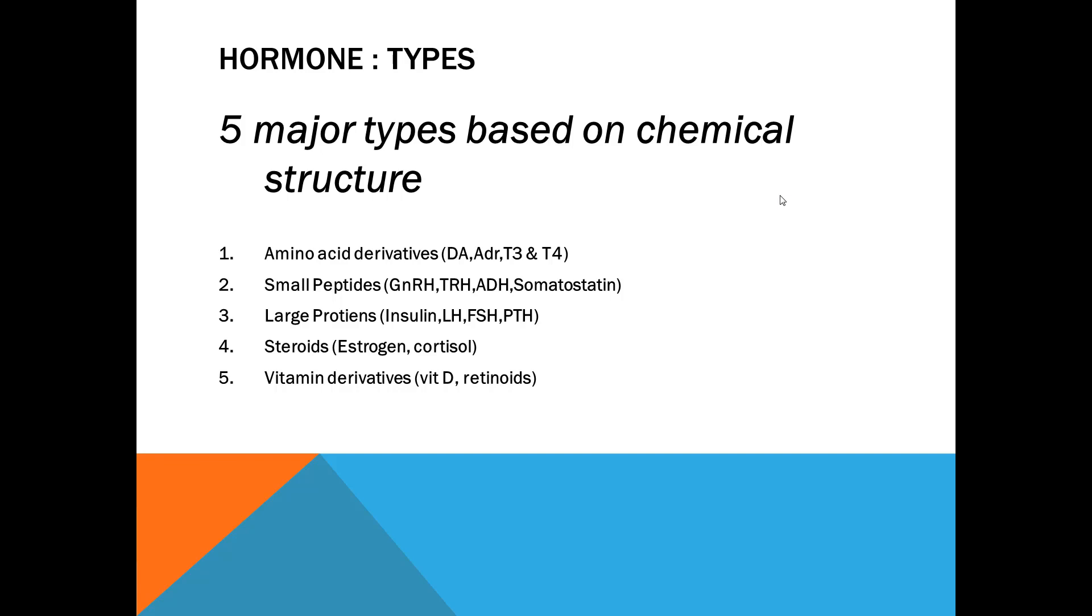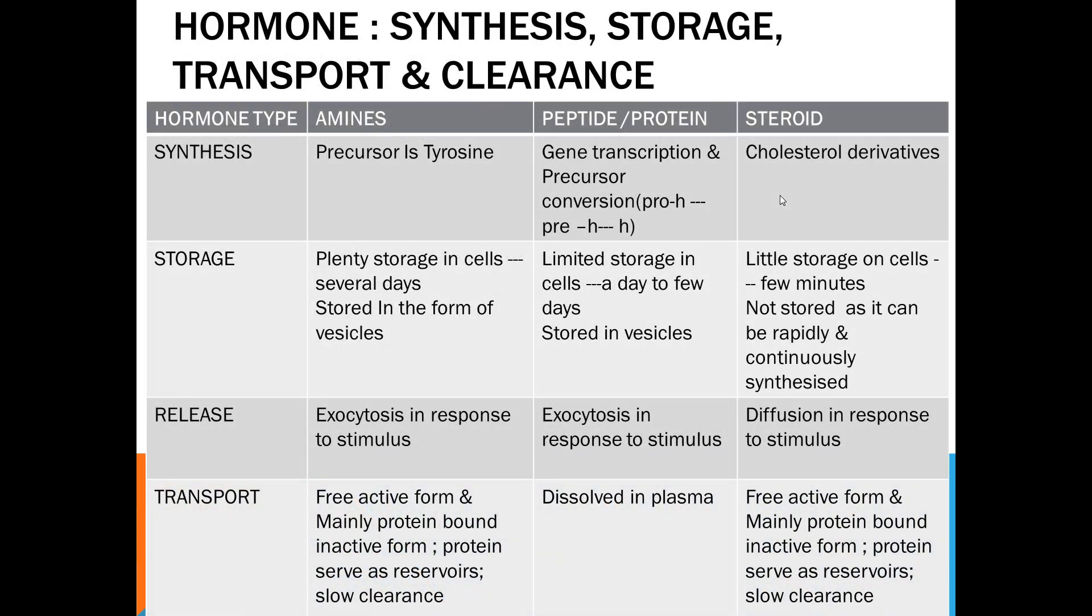Hormone types: five major types based on chemical structure. You can see amino acid derivatives—dopamine, adrenaline, thyroid T3, T4. These are all derivatives of tyrosine. Small peptides, less than 100 amino acids—gonadotropin releasing hormone, thyrotropin releasing hormone, ADH, somatostatin. These hormones are made in the hypothalamus. Third is large proteins like insulin, luteinizing hormone, follicle stimulating hormone, parathyroid hormone. These hormones are mostly secreted from anterior pituitary and other glands like pancreas and parathyroid. Steroids—estrogen, cortisol from gonads and adrenal cortex. Vitamin derivatives like vitamin D.